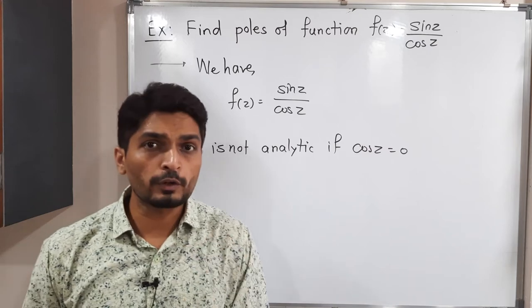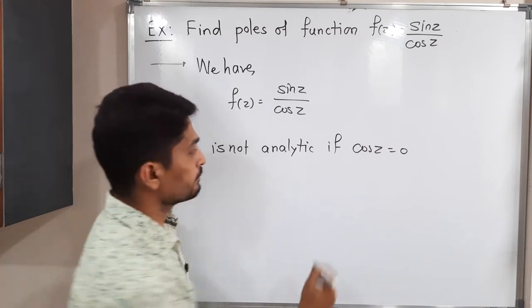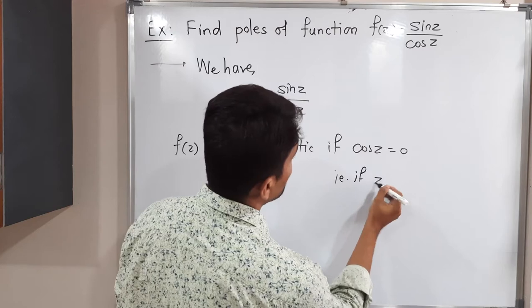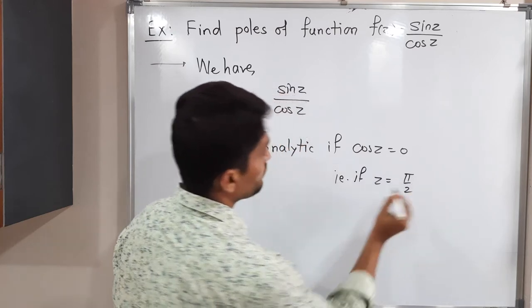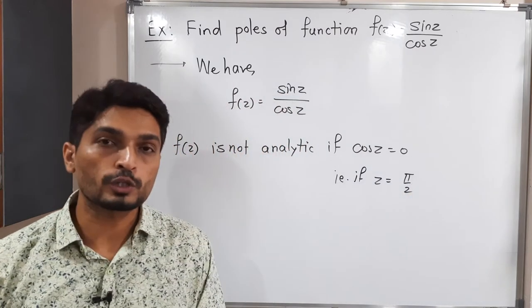At which point of z will cos z be zero? That is, z equals π/2, then cos z will be zero, since cos π/2 is zero.